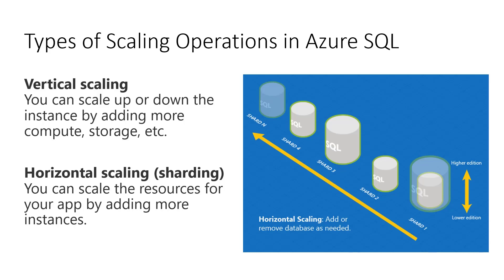There are two types of scaling operations in Azure SQL. Vertical scaling means adding more resources to an existing instance — it could be compute resources, storage resources, etc. When that no longer cuts it and you reach the limits of what a single instance can provide, you can also consider horizontal scaling, or sharding as it's sometimes referred to, which can increase the capacity and resources assigned to your application by adding more instances beyond the original capacity.